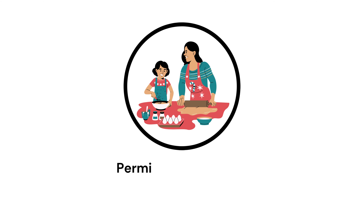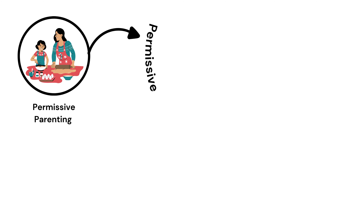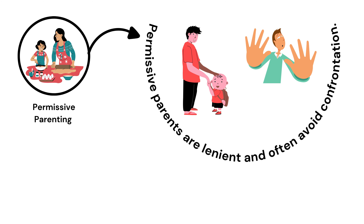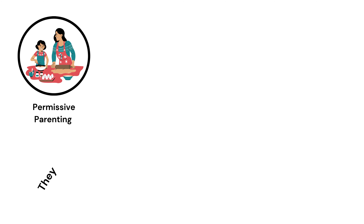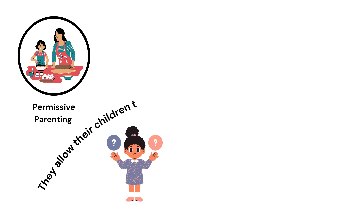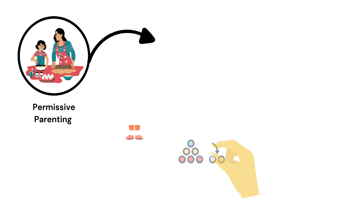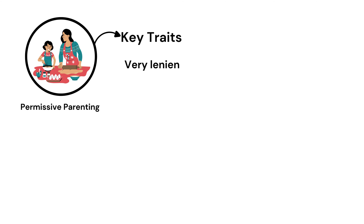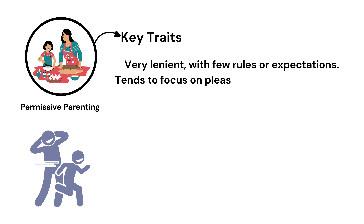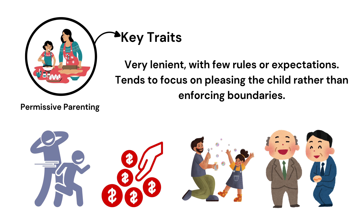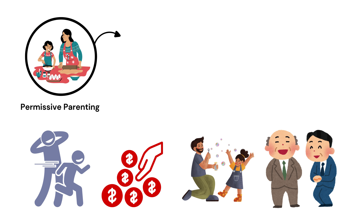Permissive Parenting. Permissive parents are lenient and often avoid confrontation. They allow their children to make many decisions, offering few rules or limits. Key Traits: Very lenient, with few rules or expectations. Tends to focus on pleasing the child rather than enforcing boundaries.